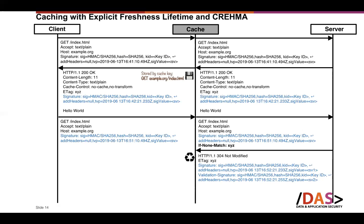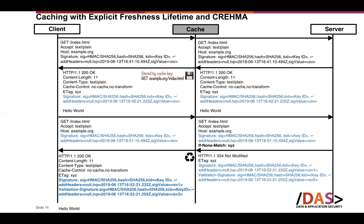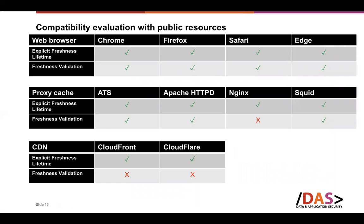The cache reuses the stored response because it received a 304 Not Modified, and it also updates the relevant header field that was generated by the server — replacing the old one with the new one. This new header includes a fresh signature value. Therefore, the client can verify the new, updated signature value and work with it successfully, since it is a valid new signature.